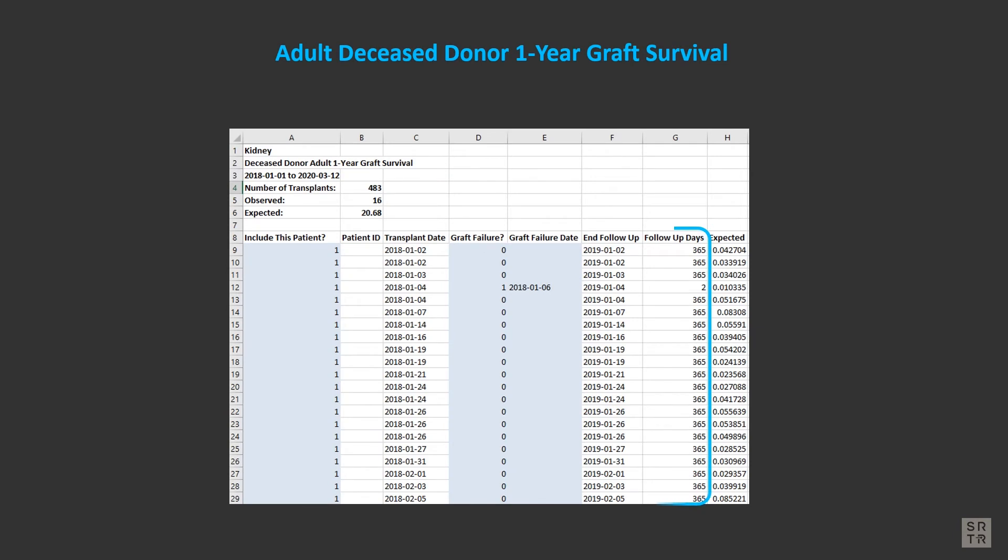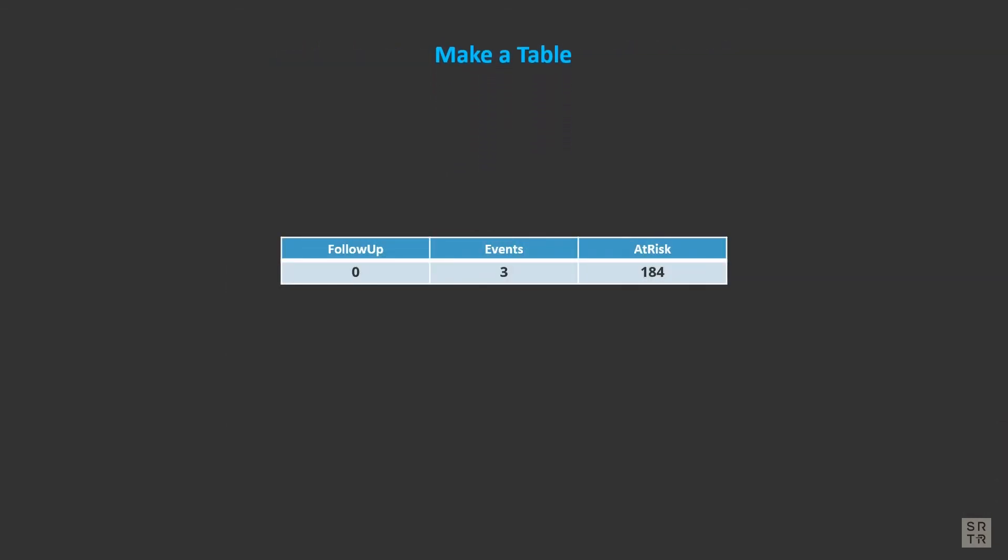The first thing to do is to sort all the patients according to the number of follow-up days in your expected survival workbook. There are three events on follow-up day zero. On day zero, which is the day of transplant, there were 184 patients at risk. Again, it may be helpful to visualize the calculation by imagining that all 184 patients were transplanted on January 1st, and that three graft failures occurred on that day. So the first row of our table is...